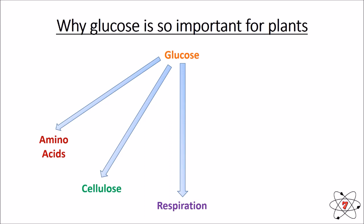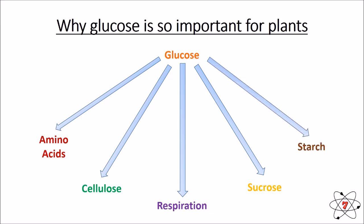Glucose is used to make cellulose: joining lots of glucose molecules together forms starch, which can then form cellulose — an essential component used to make cell walls. Glucose is also used to make sucrose, another type of sugar used within the plant, and to make starch, which is a long-term energy store. When the plant cannot photosynthesize — perhaps because it is dark — it can draw on starch reserves for energy.